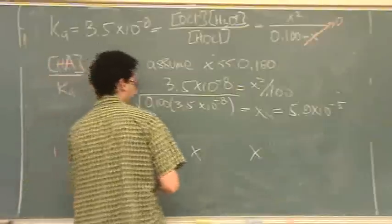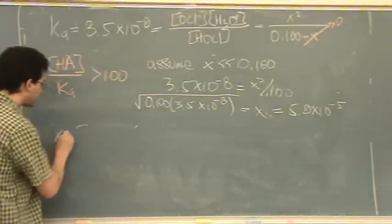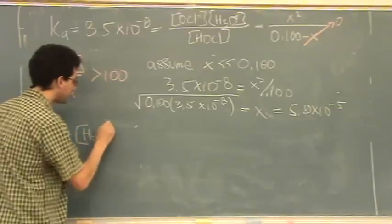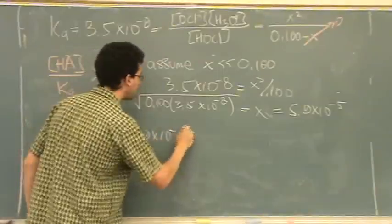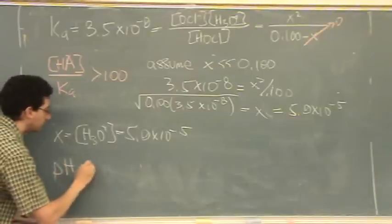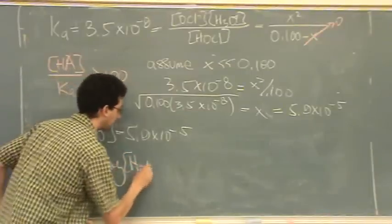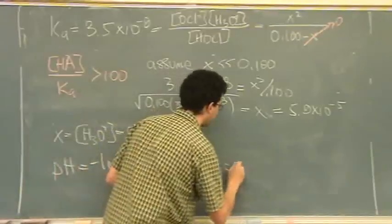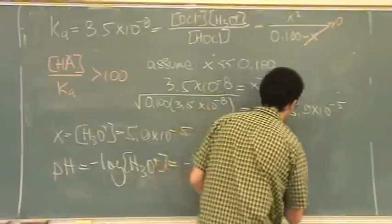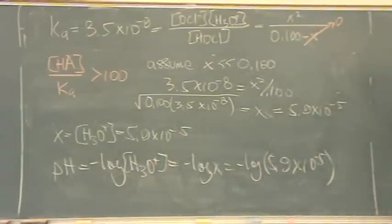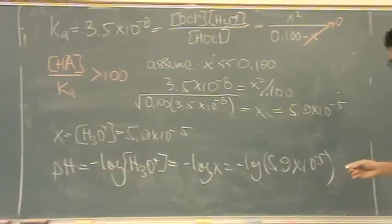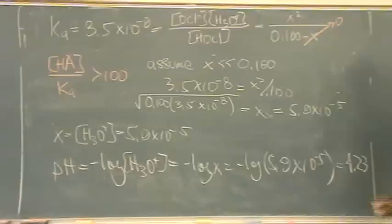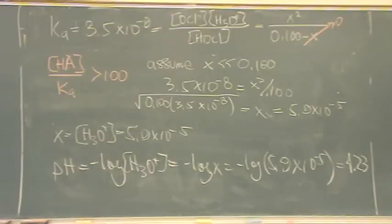From your ice table, X is going to equal your H3O plus concentration, which is 5.9 times 10 to the minus 5. Then pH equals negative log of H3O plus, which is the negative log of X or the negative log of 5.9 times 10 to the minus 5. Then you'll have your pH, which is 4.23 in this problem. So the pH is found from an equilibrium concentration. Does that make sense? This is your standard weak acid sort of question.